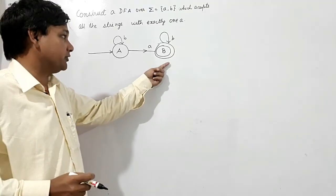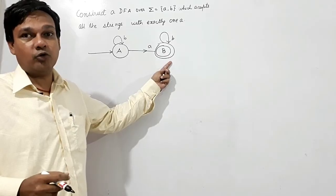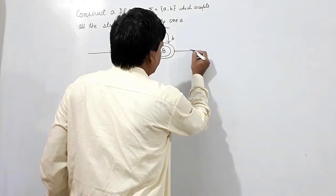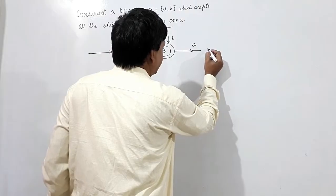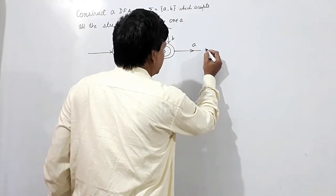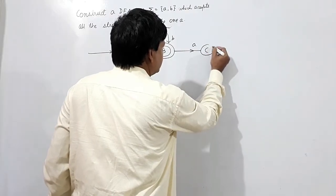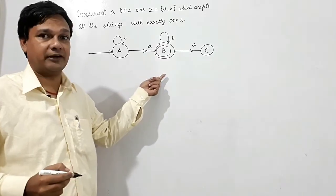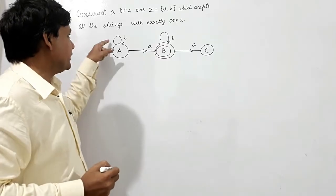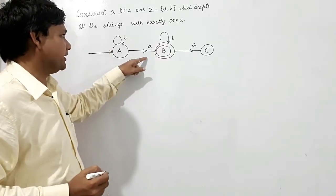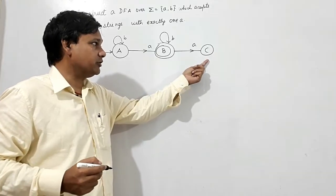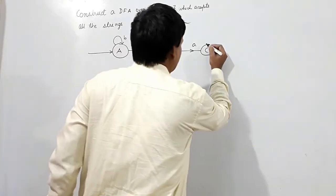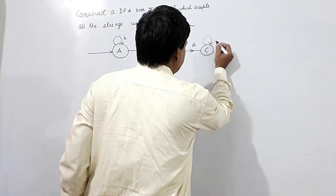But when one more A comes into the picture, it will go into the reject state which will never return to the final state. So at that reject state, whether A comes or B comes, it will always remain in this state.